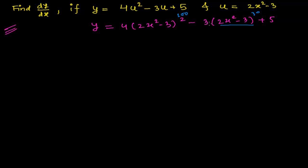In such cases, if you didn't know the chain rule, you might try to expand (2x squared minus 3) squared — which is manageable — but if the power is 100, 200, 2000, or any huge number, expanding is practically impossible. That's why we use the chain rule.